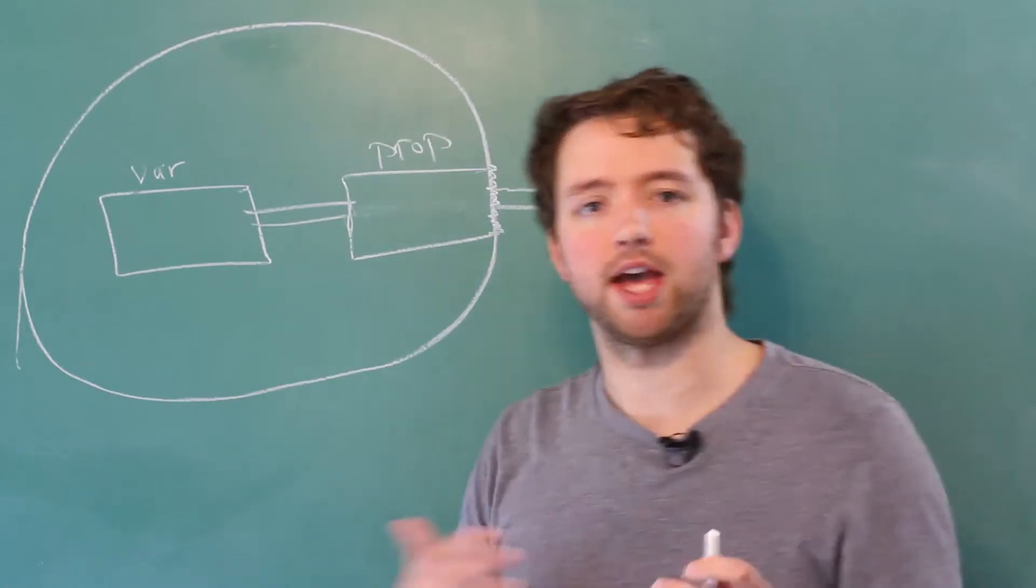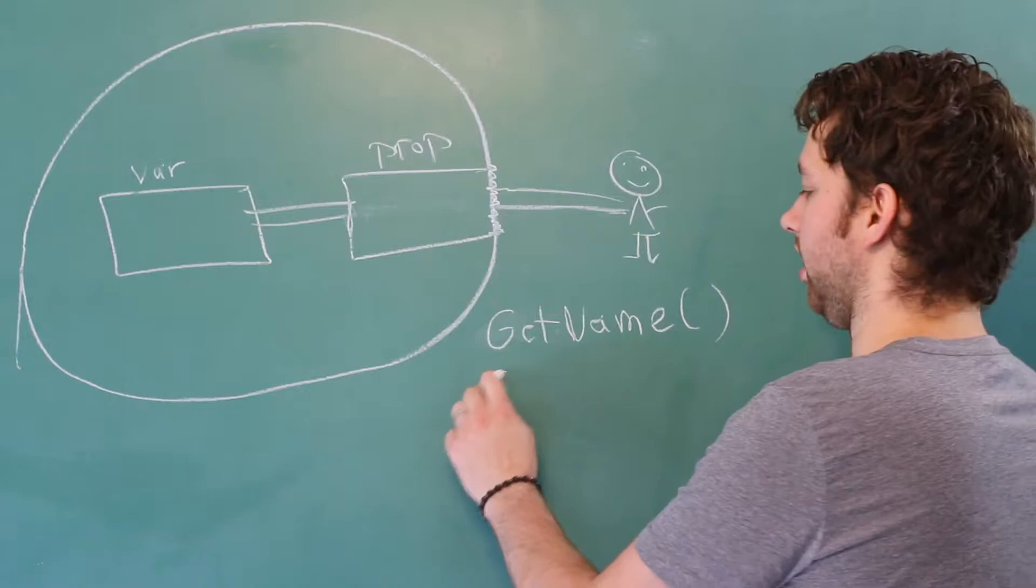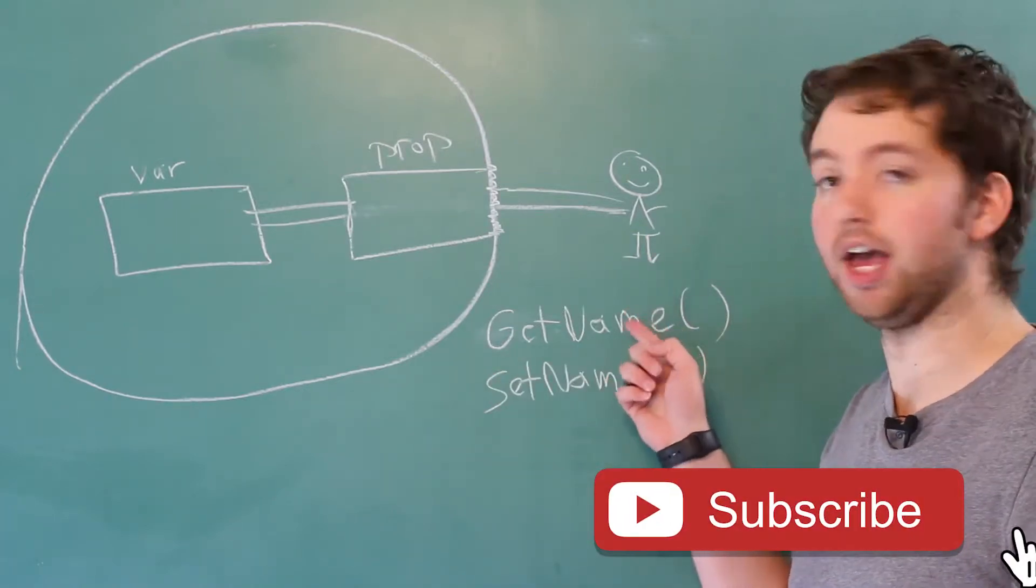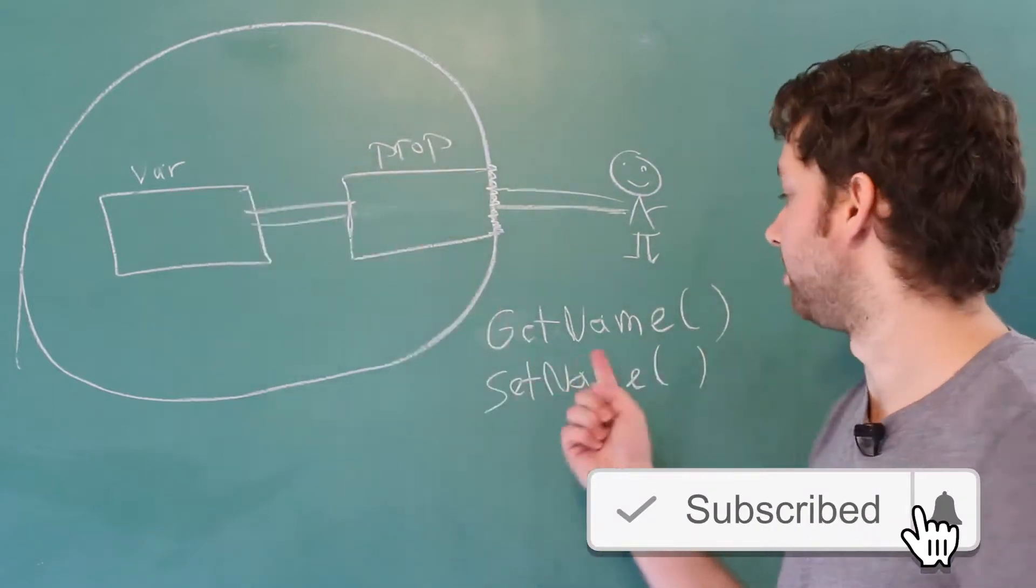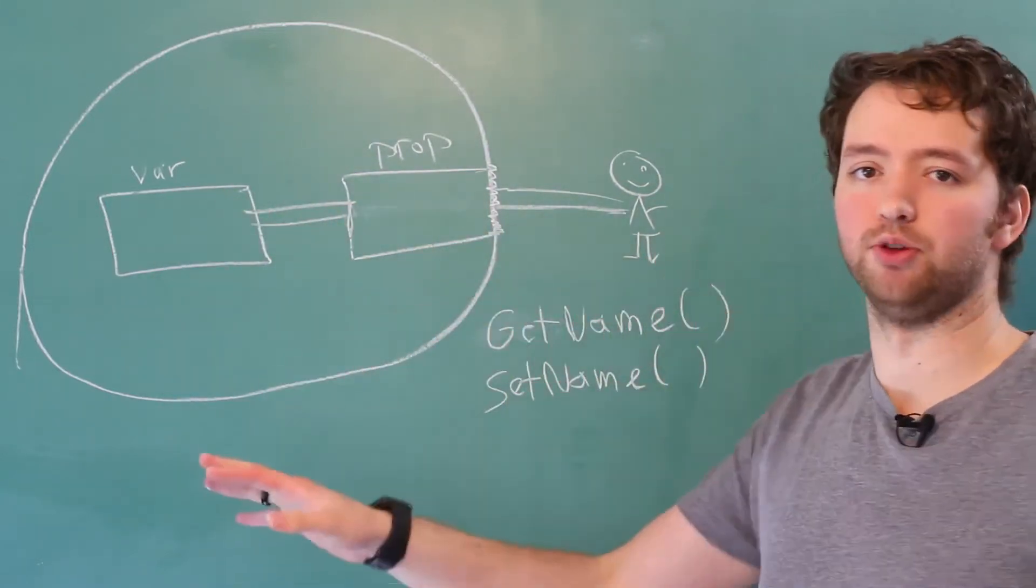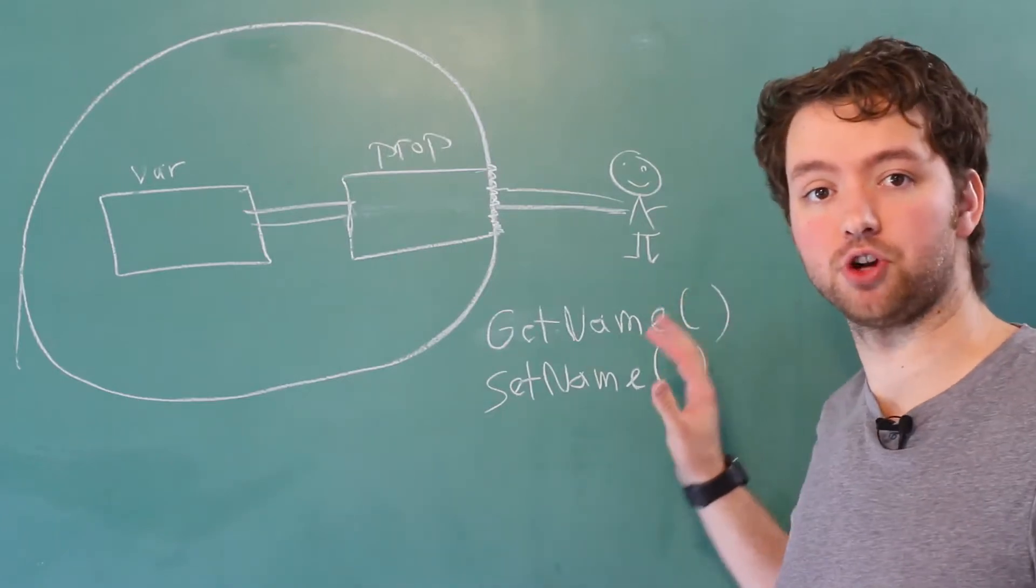So what do I mean by that? You'll have a getter method, something like get name and set name. This allows you to get the name or get whatever the field is, and this allows you to set a value to it. You'll see this in Java and other programming languages and occasionally in C Sharp.